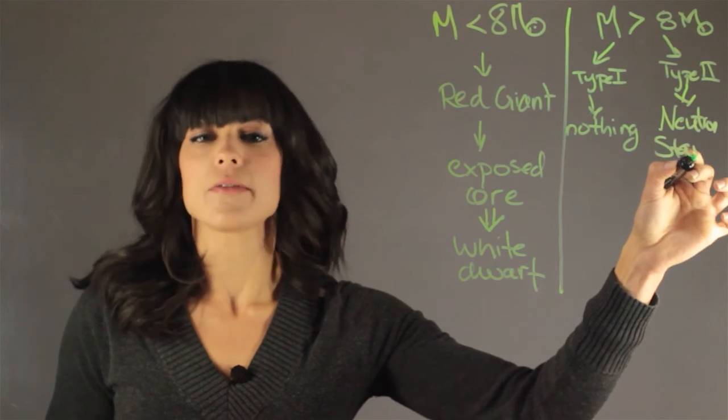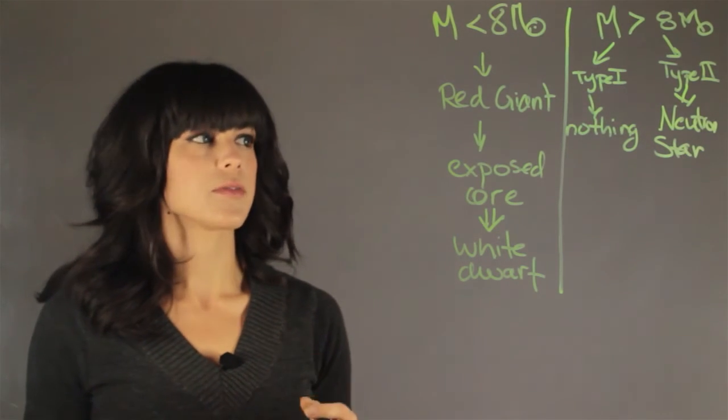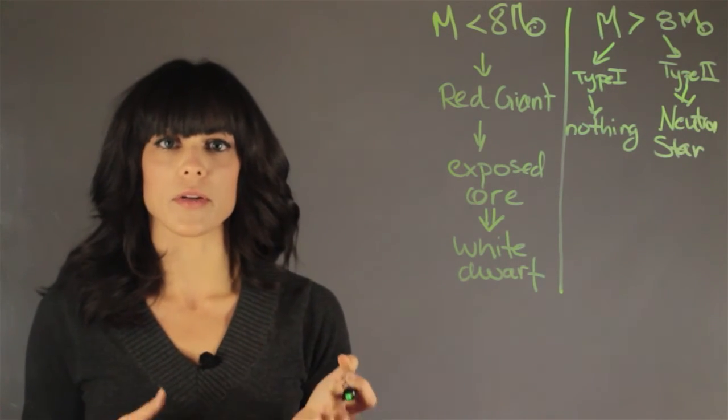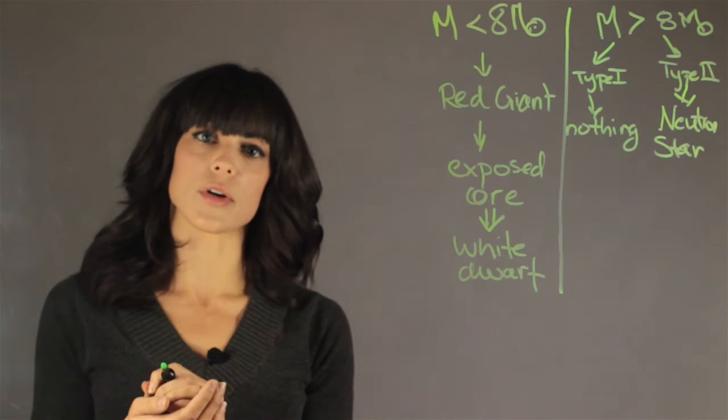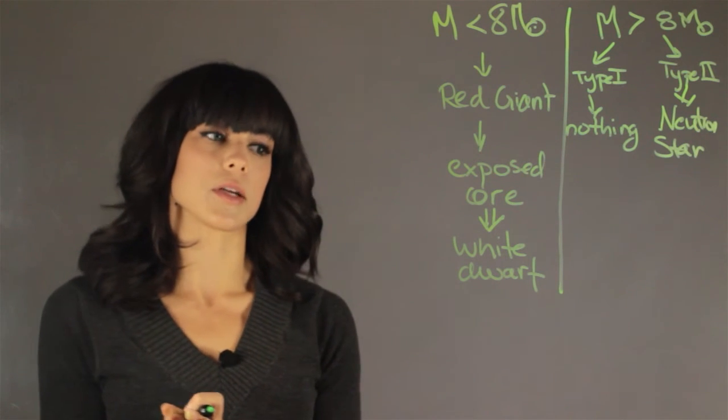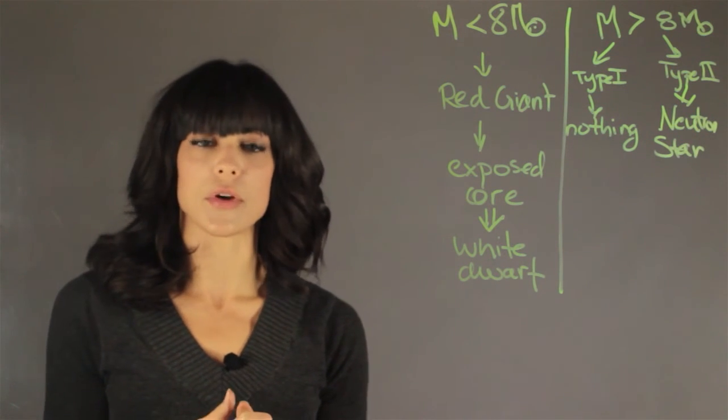So as you can see, they're very different processes and they have very different ways to get to that remnant of the star. But it's whatever is left over of the star. And that's the only similarity between a white dwarf and a neutron star.